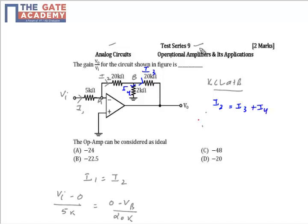I2 is nothing but 0 minus VV by 20k is equal to I3 is VV by 2k plus I4 is VV minus V0 by 20k. To solve this expression, you will get V0 is equal to VV plus VV plus VV, which is V0 is equal to 12VV.